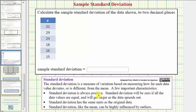Here are a few important characteristics. The standard deviation is always positive. The standard deviation will be zero if all the data values are equal and will get larger as the data spreads out. The standard deviation has the same units as the original data, and like the mean, can be highly influenced by outliers.